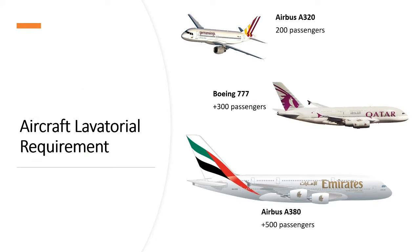Narrow body aircrafts like an Airbus A320 can carry more than 200 passengers, while a code F aircraft like Airbus A380 can carry more than 500 passengers on board. What we didn't discuss was how long these many passengers remain in the air. An Airbus A320 can fly non-stop for over 7 hours, for example between Bahrain and London Heathrow. A 777 and A380 can fly non-stop for over 17 hours on many long haul international routes.